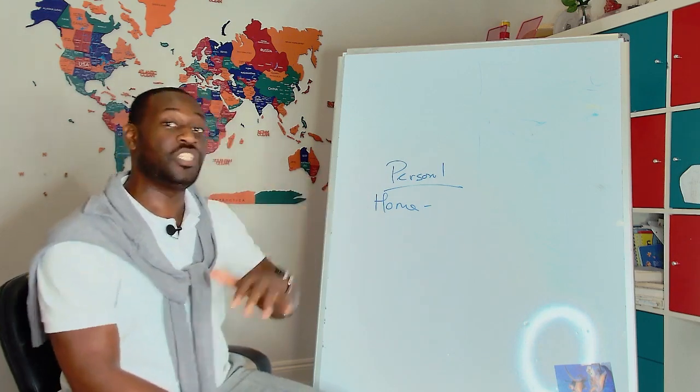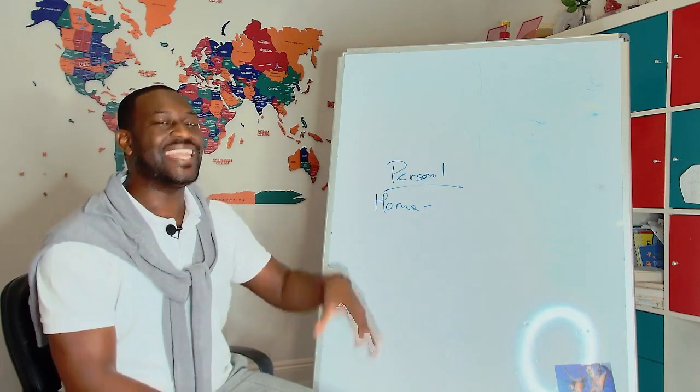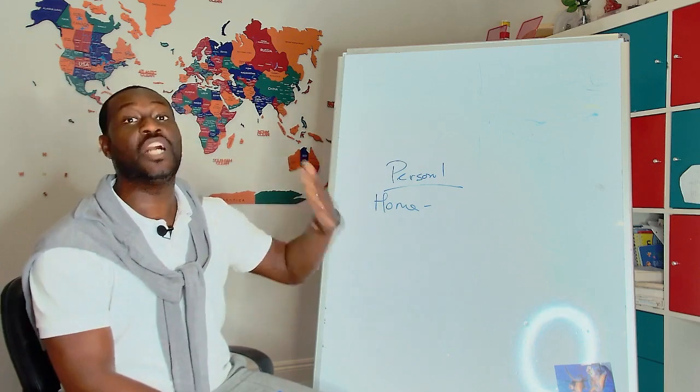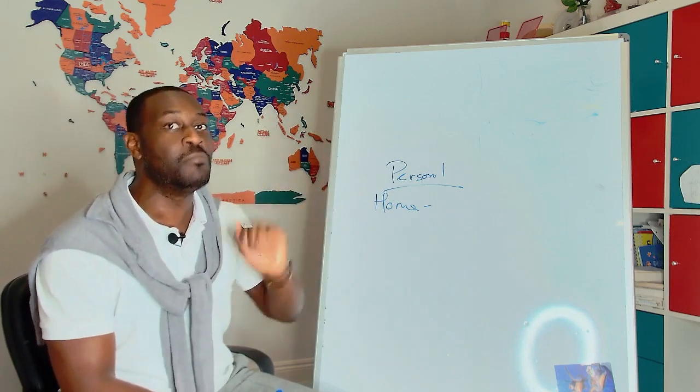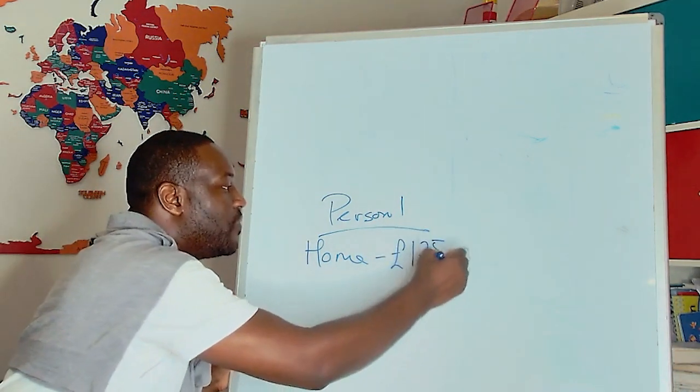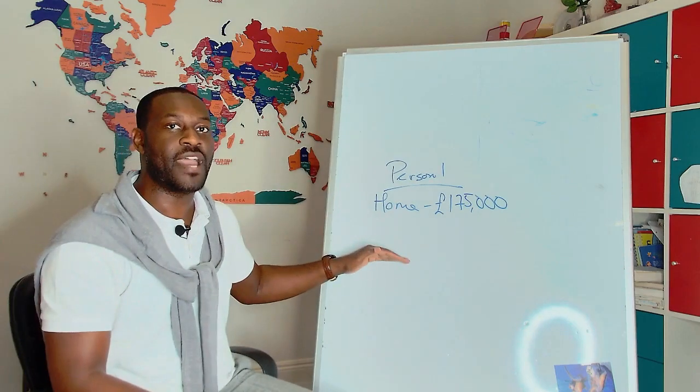So we're going to assume that they own a house which is £230,000. Now, if they bought that traditionally, they would have had a 10% deposit, roughly £23,000, and they would owe in or around £180,000, £190,000 in mortgage. So we're going to be nice and say this person owes £175,000 in debt. That's their largest debt.